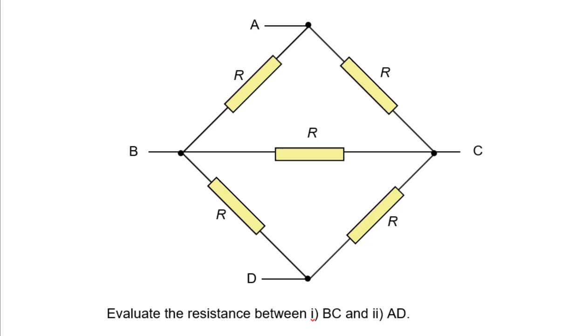to figure out the resistance between point B and C, we should imagine the current that starts from B and ends at C. That means point A is a dead end, no current will go that way.